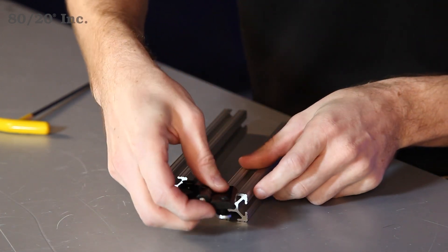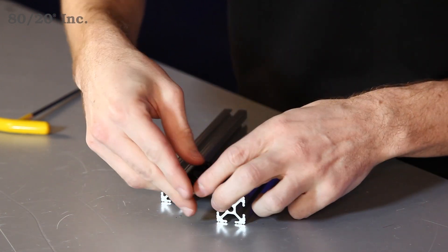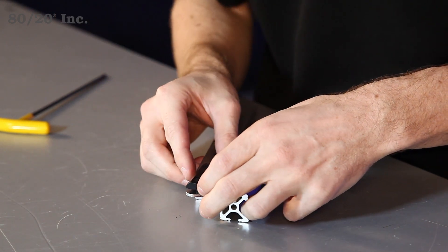And we'll take half of the hinge and slide it right into the open T-slot. And we'll grab the other bar and do the same thing.